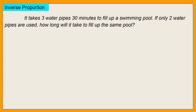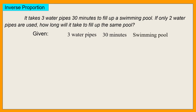Anong klaseng proportion ito? This is an inverse proportion. Kasi kung 3 water pipes, 30 minutes — kung 2 na lang ang water pipes, i-di ba babagal na yun? Mas matatagalan na para mapuno ang swimming pool. So baligtaran na yan. Kung monte yung water pipes, tatagal yung pagpuno ng swimming pool. Given natin: 3 water pipes, 30 minutes. Yung hindi nagbabago dito ay yung swimming pool — parehong swimming pool lang ang pupunuin.